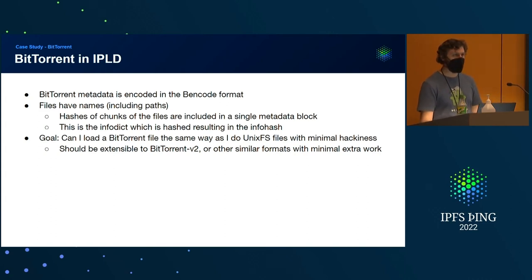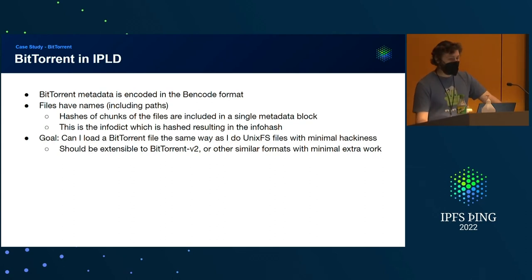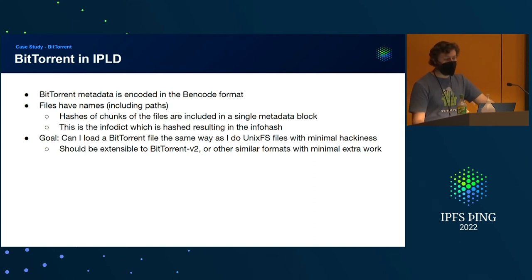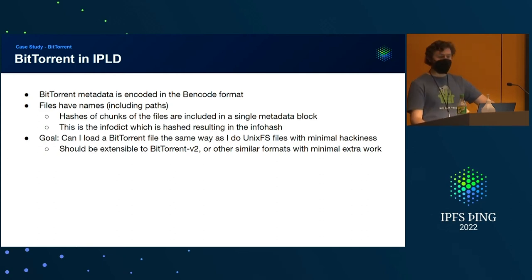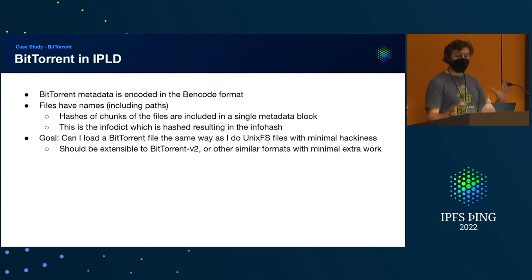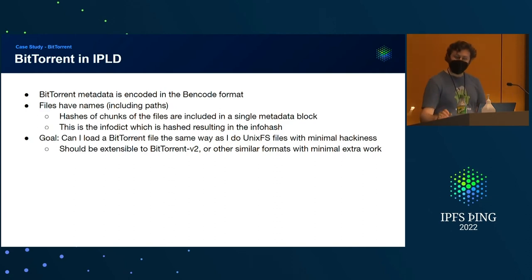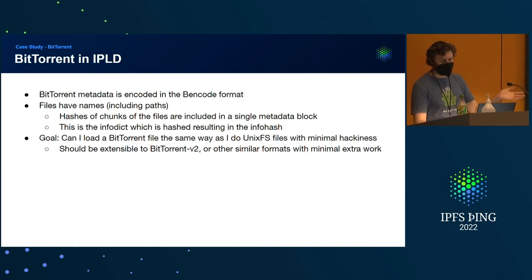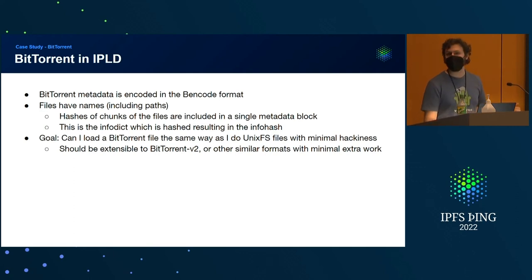The metadata is encoded in a format called Bencode. The files have names including paths. The hashes of the chunks are included in the metadata block. This metadata is called an infodict, which when hashed has the clever name of infohash. The goal: can I load a BitTorrent file the same way I do for UnixFS files? And can I make it so that when I do BitTorrent v2 or other things, it won't be that much extra work?